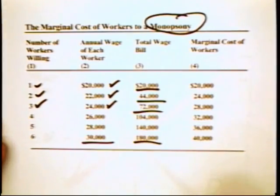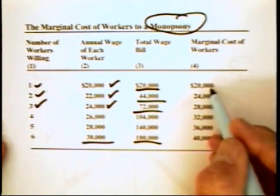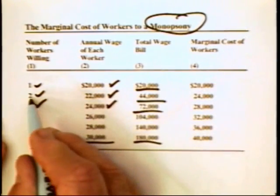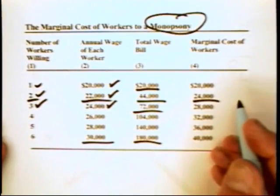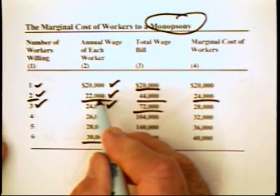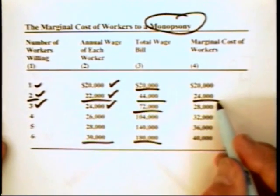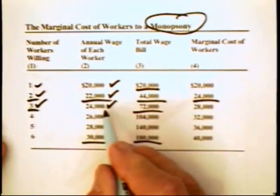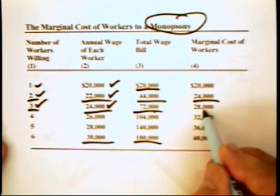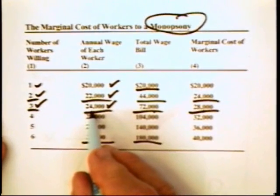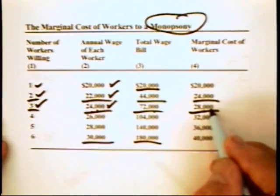Its total wage bill will be $180,000. When it hires one worker, the marginal cost of that worker is $20,000. But when the employer hires a second worker and the wage for both goes up to $22,000, the marginal cost of that second worker goes to $24,000 — because you are paying the second worker $22,000, but you're also having to raise the wage of the first worker by $2,000. $22,000 plus $2,000 gives a marginal cost of $24,000. If the employer hires three workers at $24,000 each, total wage bill is $72,000, and the marginal cost of labor is $28,000 — paying the third worker $24,000 plus raising wages on the first two workers by $2,000 each ($4,000 total).